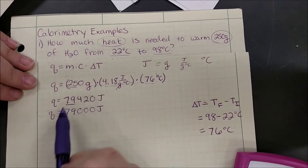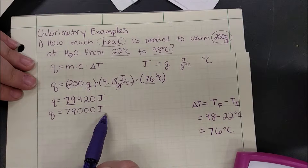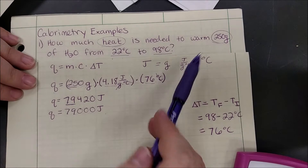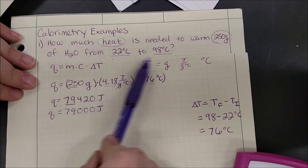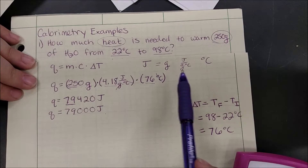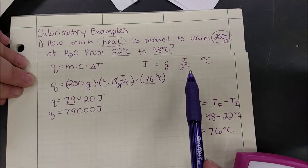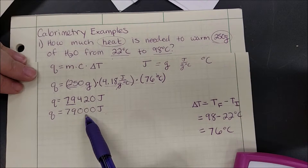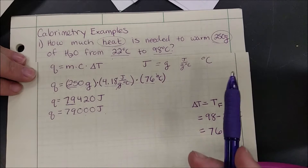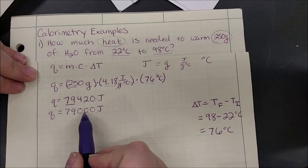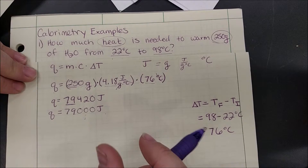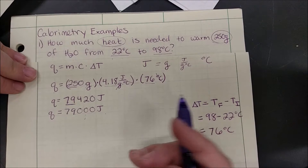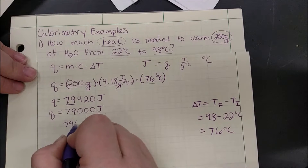Our answer is that it takes 79,000 joules of energy to heat up this water. For perspective, 250 grams of water is about a cup, and raising it from 22 to 98 degrees Celsius is going from room temperature to almost boiling — like heating water for tea or soup. Most of the time we don't think in joules because it is such a small increment; many times they convert to kilojoules.